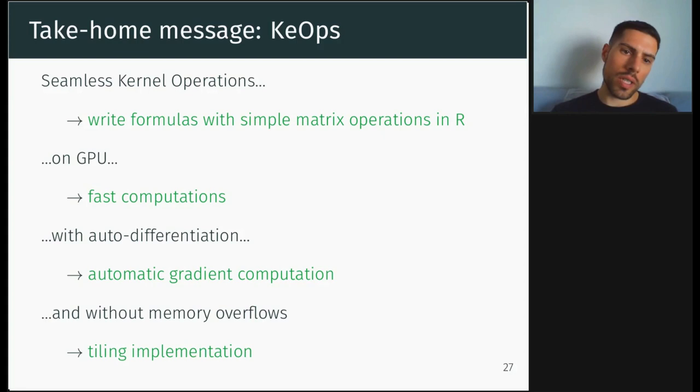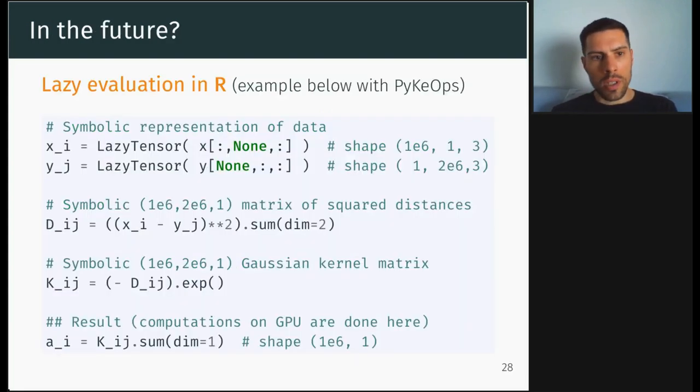So to conclude, KeOps allows you to do seamless kernel operations. So you just have to write formulas with simple matrix operations in R on GPU to do fast computation with auto-differentiation based on automatic gradient computation and without memory overflows thanks to a tiling implementation.